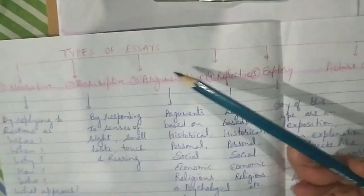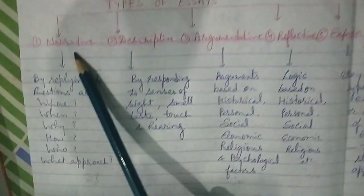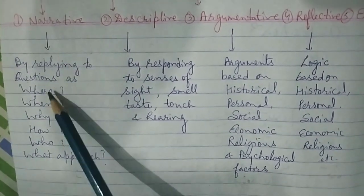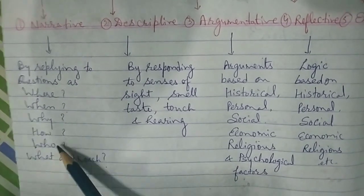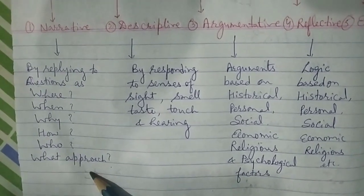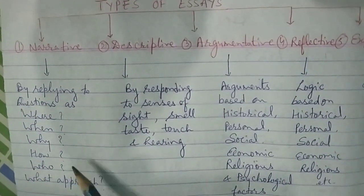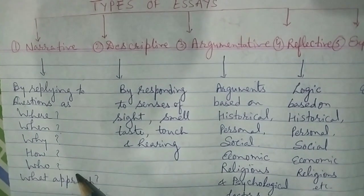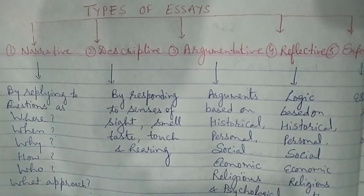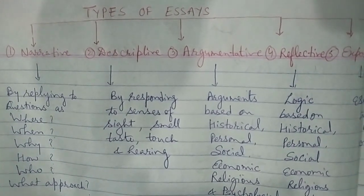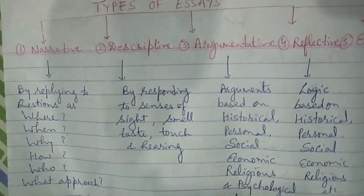Now we will know about the different types of composition or essays. First is narrative. Narrative essays reply to questions such as where, when, why, how, who, and what. As the name suggests, it is the narration of a story or an event that has happened. This could be a real or an imaginary event like an accident, festival, social function, street incident, a journey, or a natural disaster.